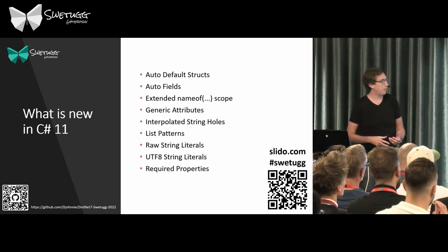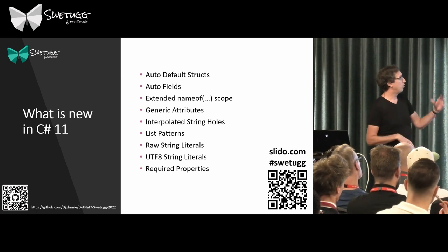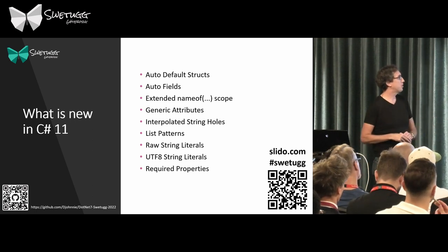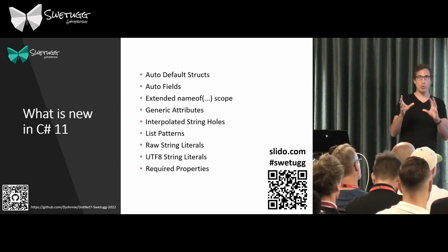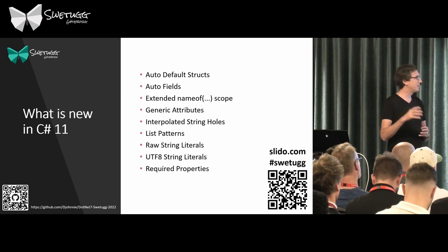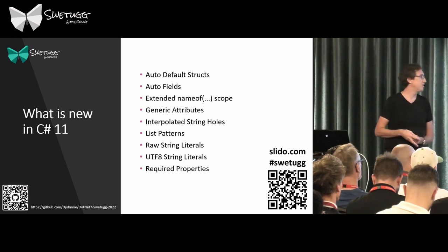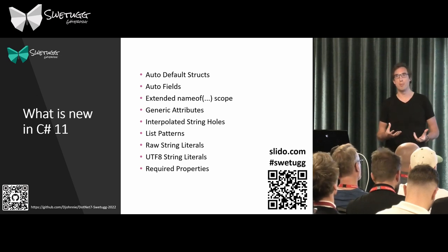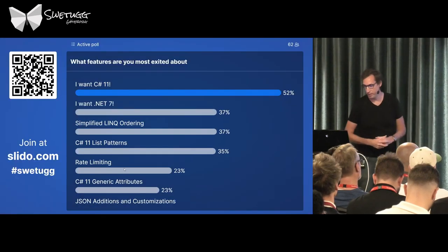For C# 11: auto-default structs, auto fields, extended nameof scope, generic attributes, interpolated strings with holes, list patterns, raw string literals, UTF-8 string literals, and required properties. These are all things I can talk about. Let's see if people already voted.